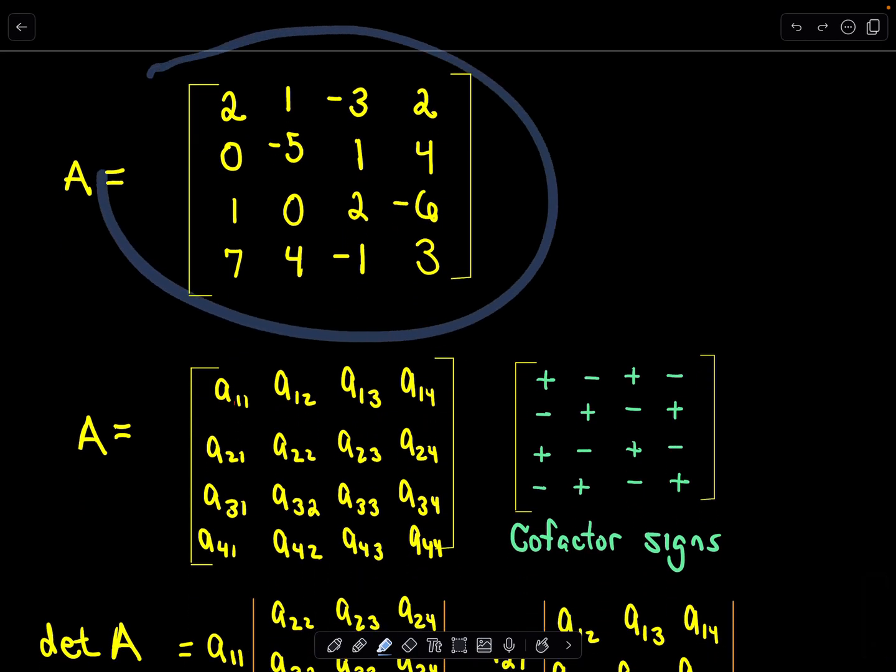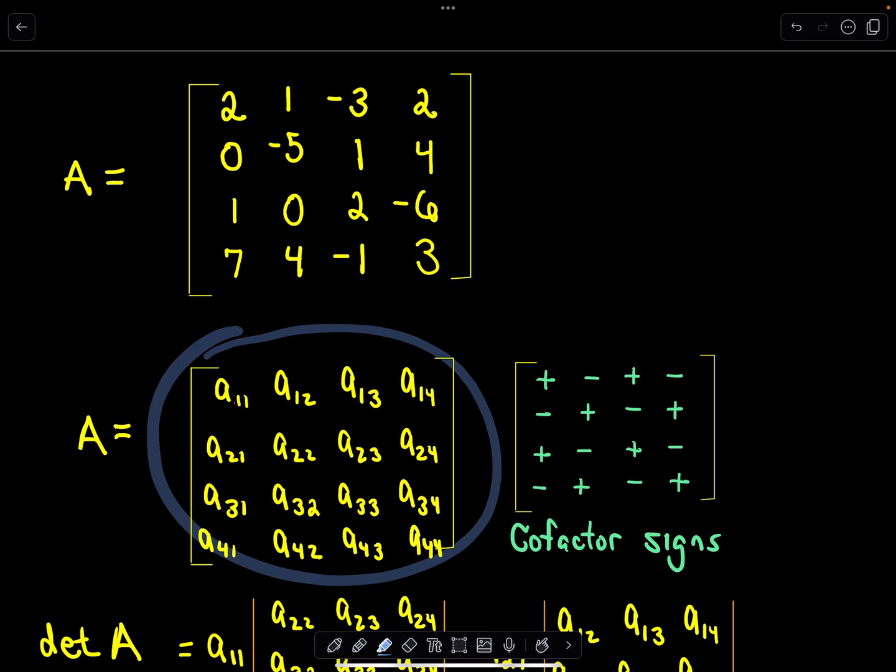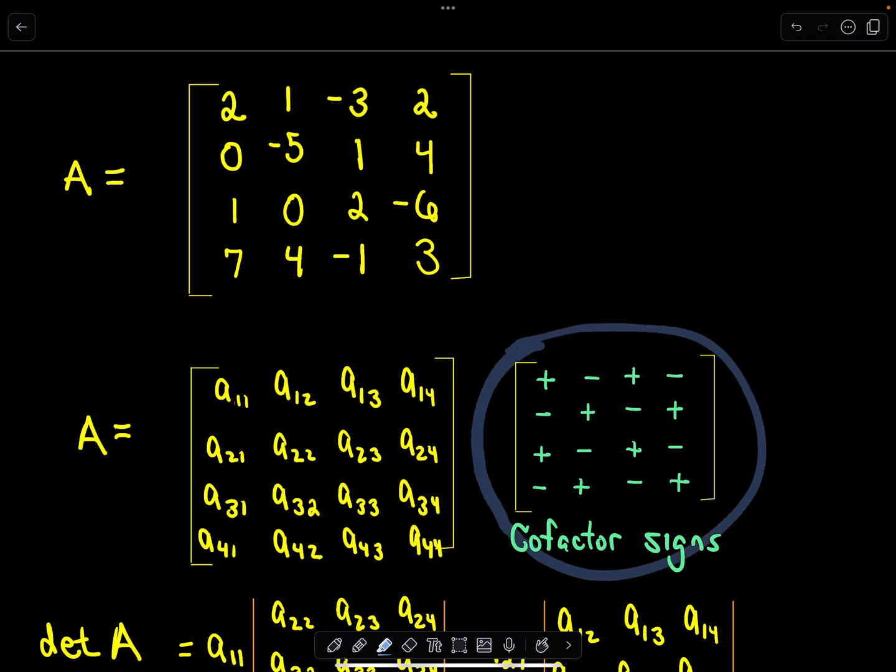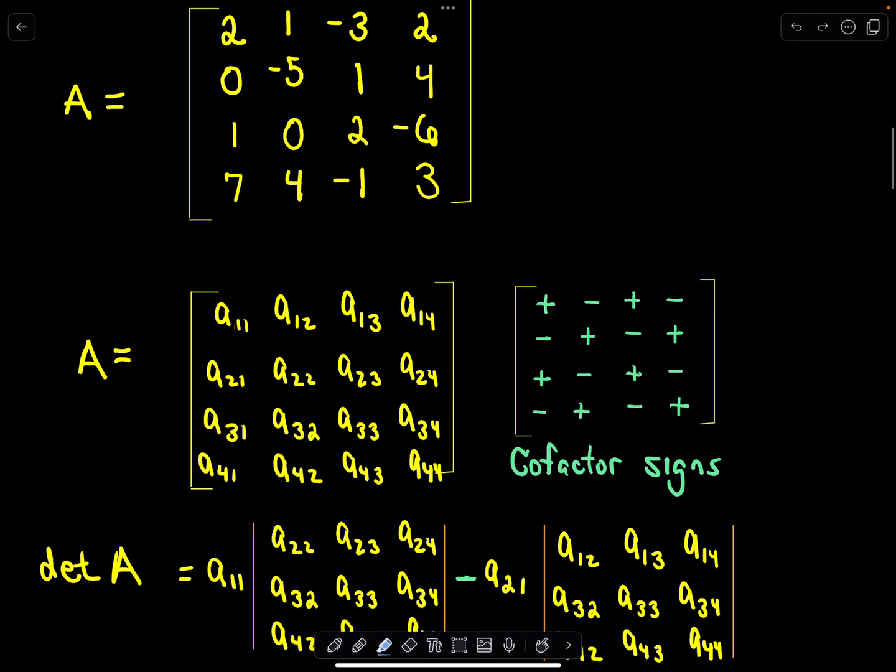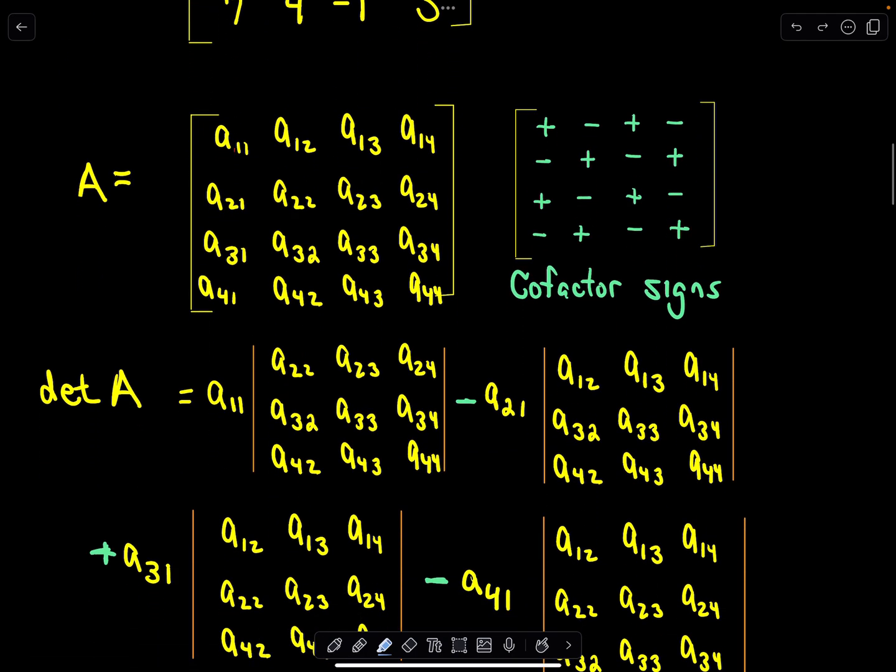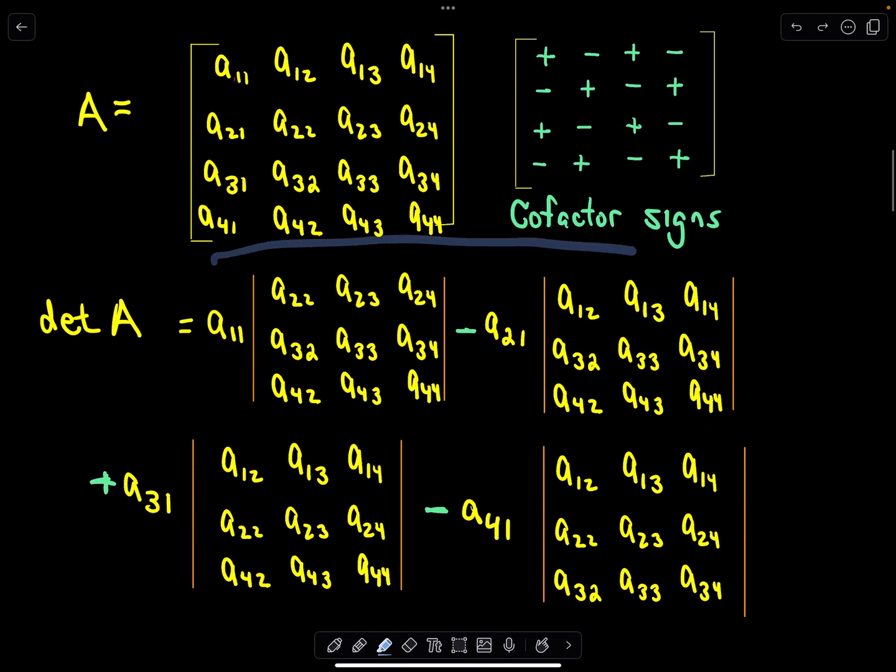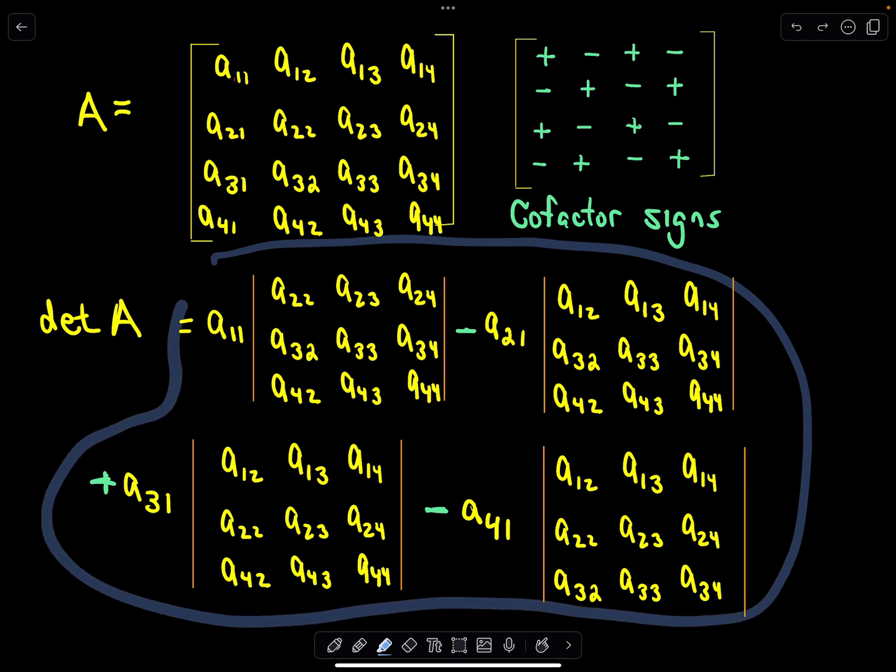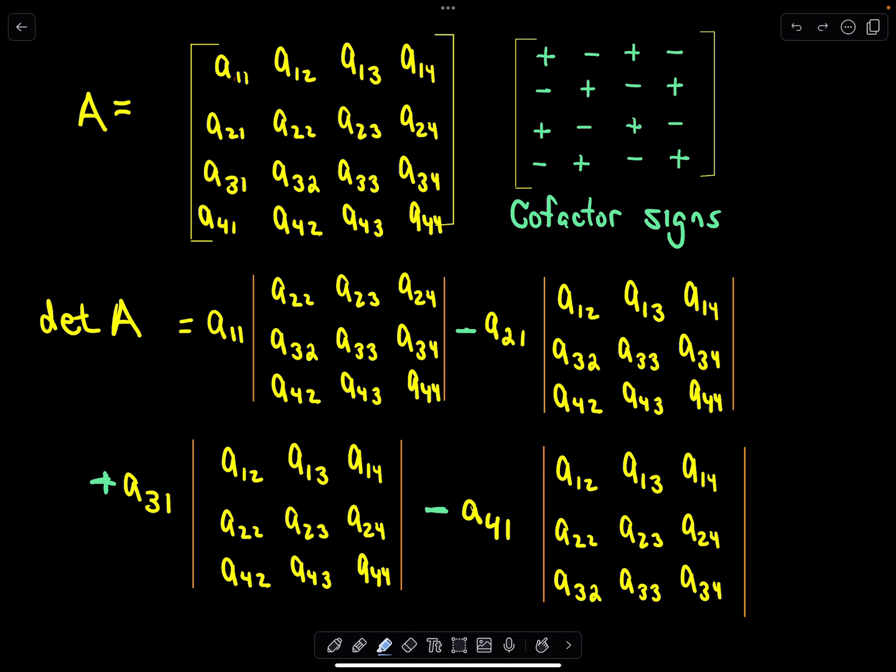So we've got our matrix that we want to find the determinant of. I've got the entries labeled a little more generically and then I have these cofactor signs off to the side and you'll see where we use those. So a formula to compute the determinant of that matrix is right here. So you may ask where on earth does that come from given our matrix A? Well, let's look at that real quick.